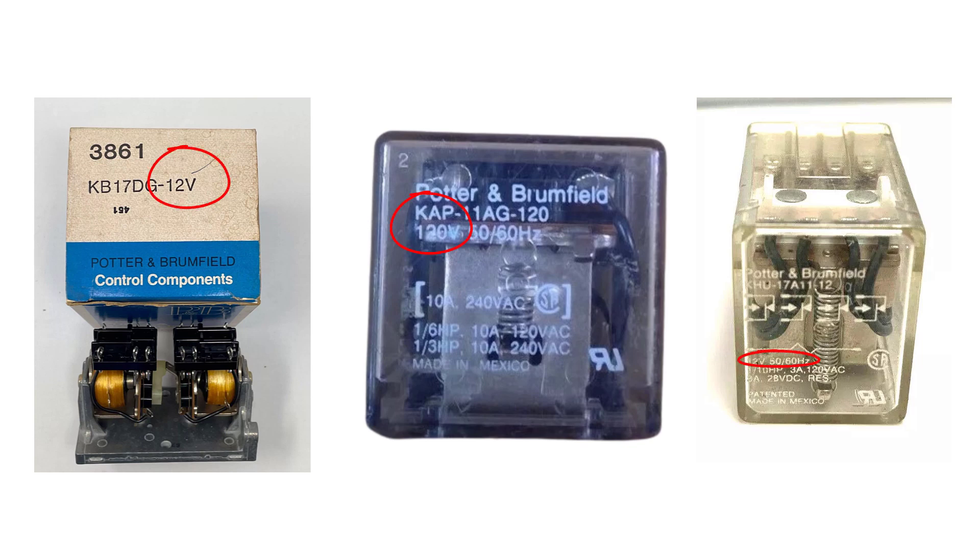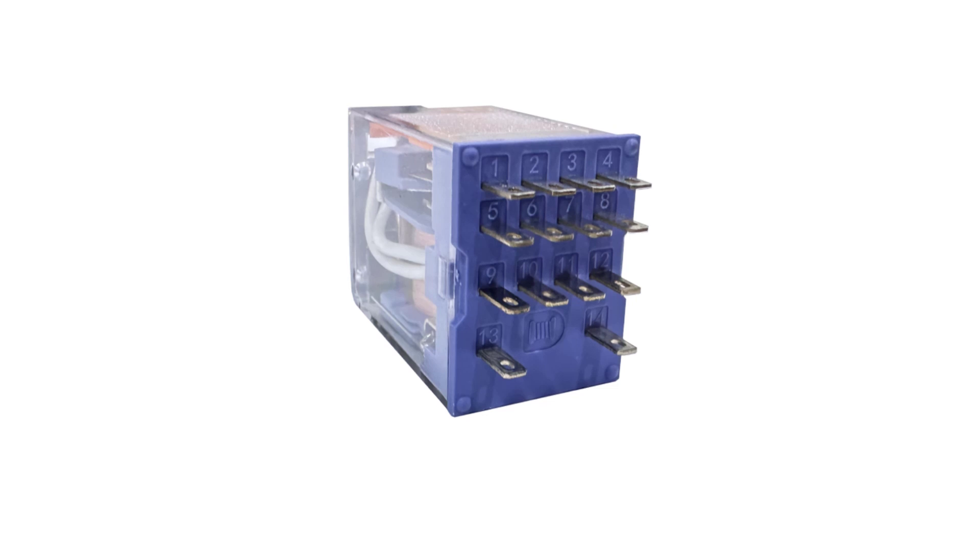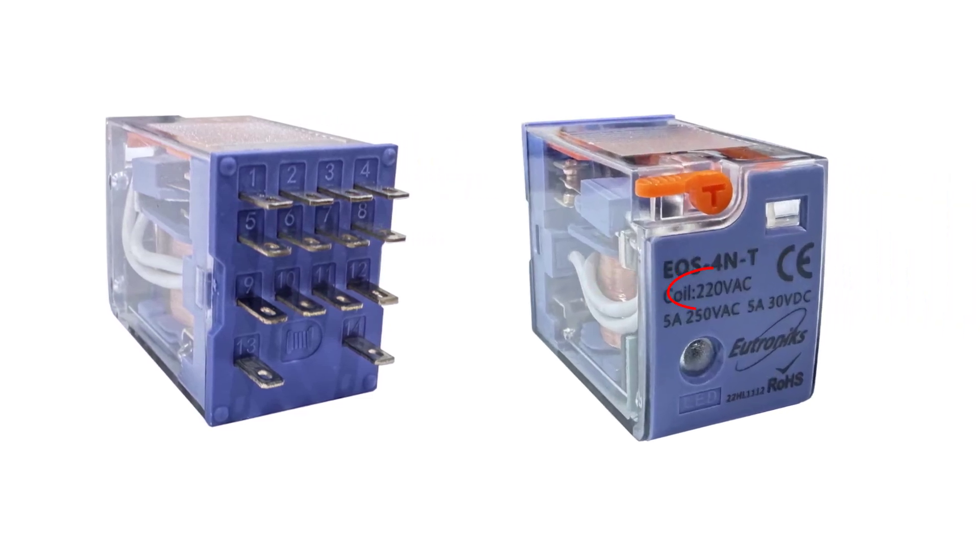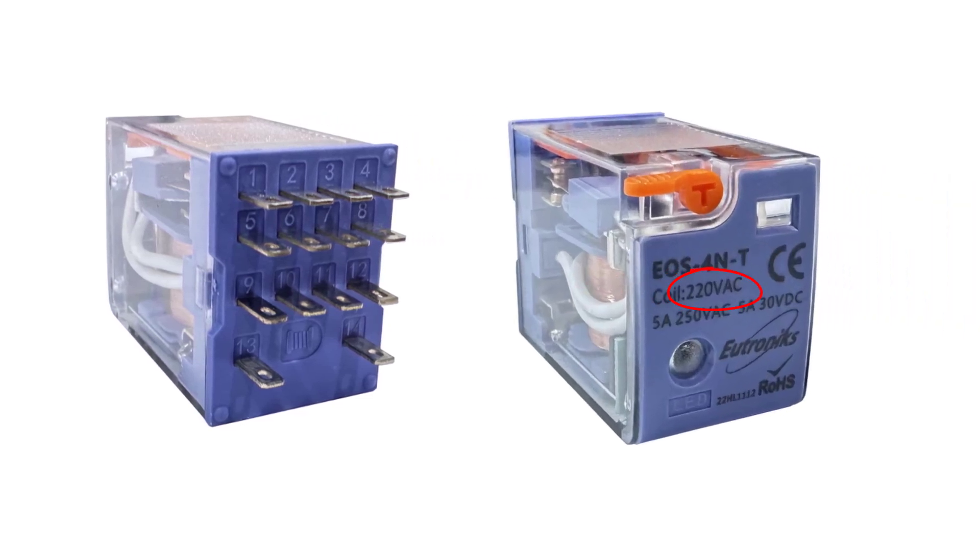Because if you energize it with different voltage value it could be damaged. Here, for example, coil voltage is 220 volt. So to energize A1 A2 coil we will connect it to a 220 volt system.